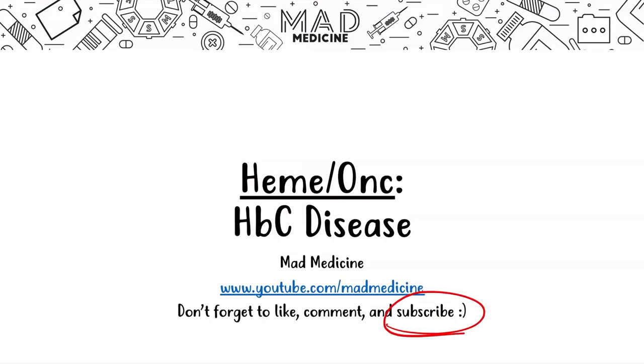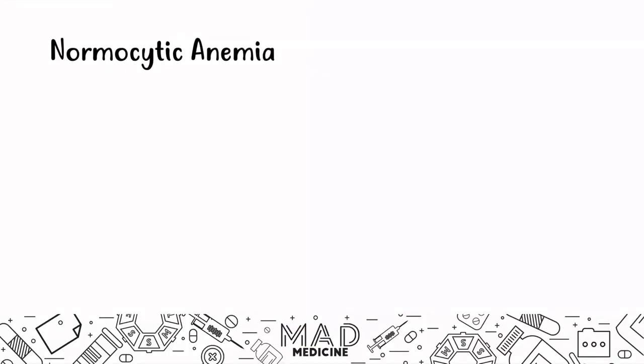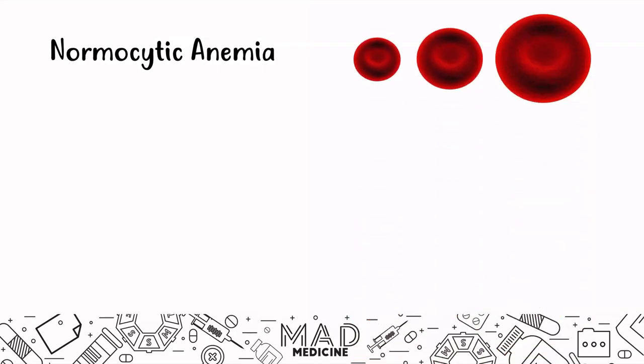Let's talk about normocytic anemia. Normocytic anemia is a type of anemia based off of the size of the red blood cell, and it is going to be classified by an MCV — mean corpuscular volume — that is going to be 80 to 100, a normal red blood cell size.